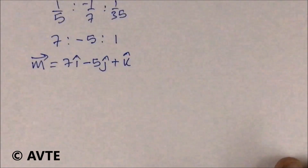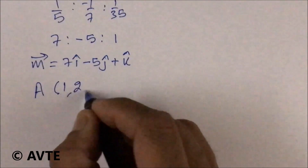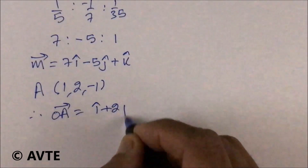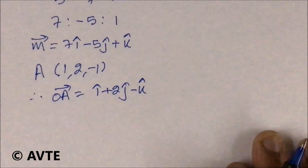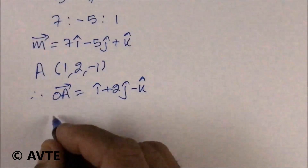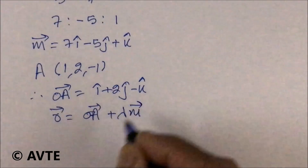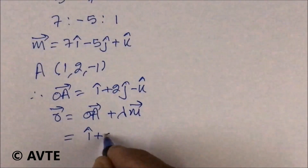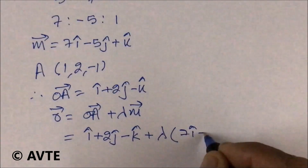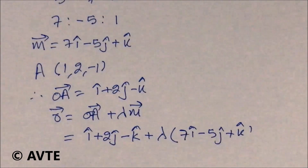The required line passes through point A(1, 2, −1), so the position vector OA = i + 2j − k. Using the vector form of a line, r = OA + λM, the required answer is: r = (i + 2j − k) + λ(7i − 5j + k). Thank you very much.